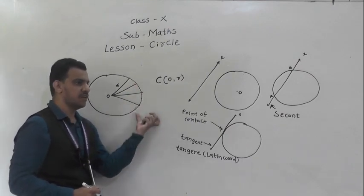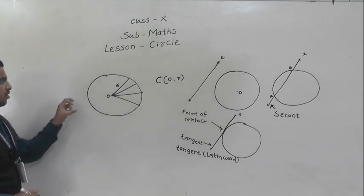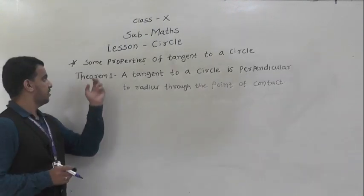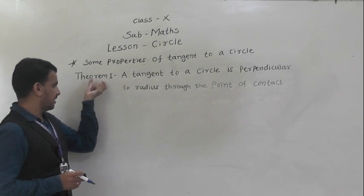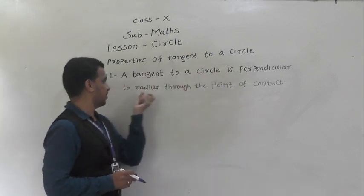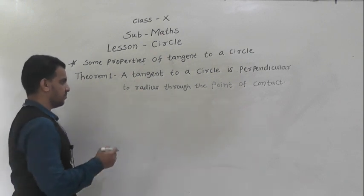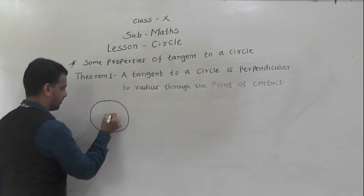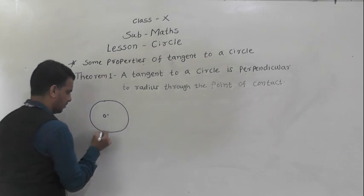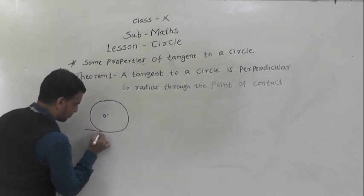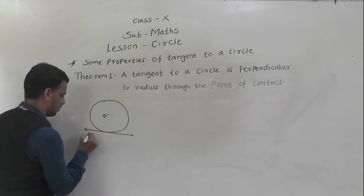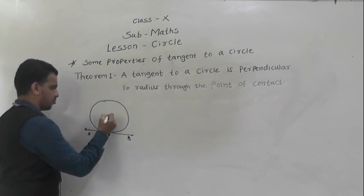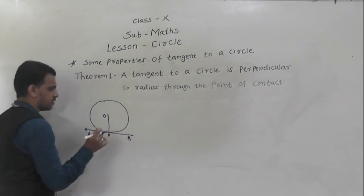Now we will see some properties of tangent. The first property is a theorem: a tangent to a circle is perpendicular to the radius through the point of contact. We draw a diagram — this is a circle having center O and radius R, this is a tangent AB, and the point of contact is P. We have to show that OP is perpendicular to AB.